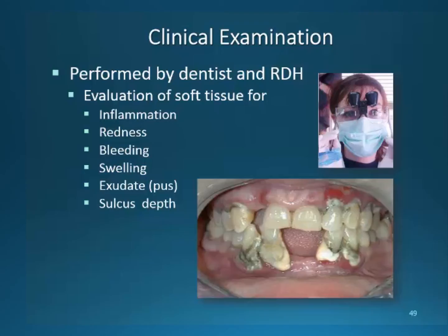As with dental decay, severity determines classification. There are two types of classification, but we will only learn the American Dental Academy of Periodontology classification in this course, referred to as the ADA. In the upcoming courses, you will learn more about the American Academy of Periodontology classification.